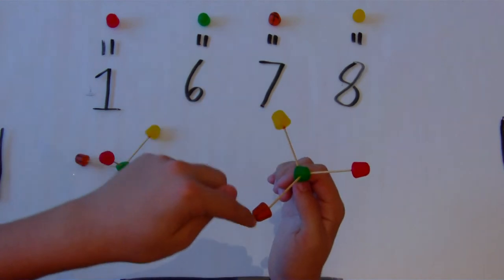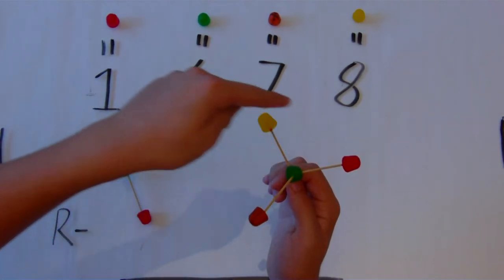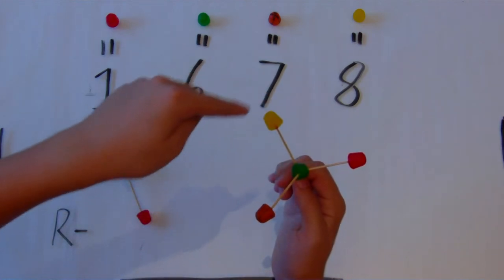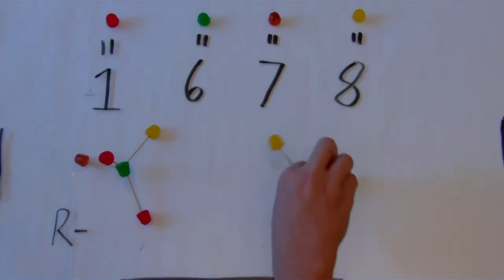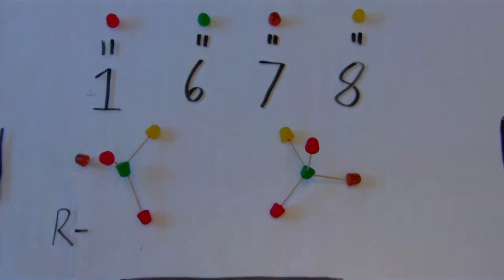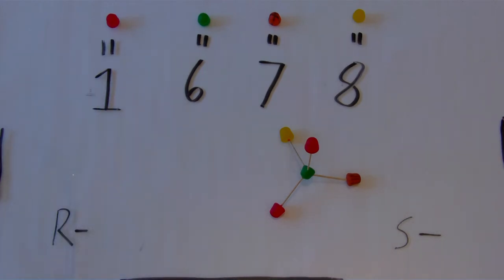We move our finger from the atom with the highest atomic number to the second highest to the lowest atomic number, noting the direction. In this case, the direction was counterclockwise or to the left. When the direction is to the left, we denote it with an S. There's one more thing I like about these high-tech molecule models: you can eat them!